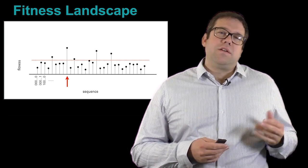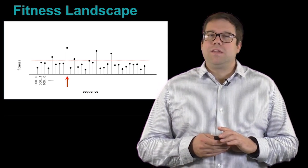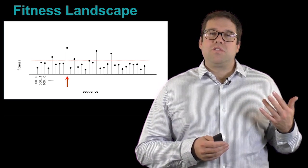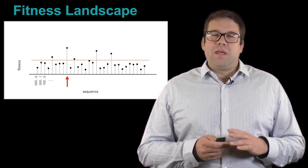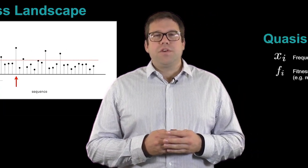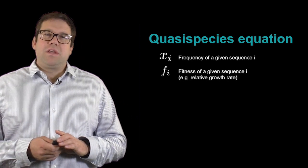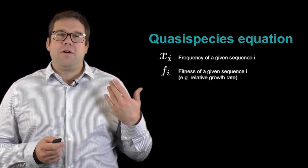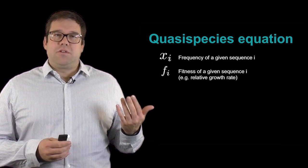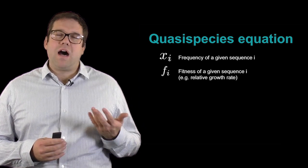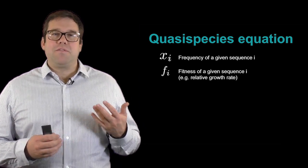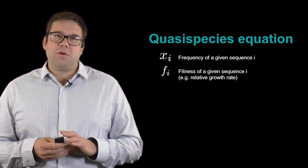There are easy ways for us to define this process mathematically, and this is actually some of the most traditional mathematical biology that we know. So let's look at a simple model for this fitness landscape. The first thing we can do is talk about the frequency of a particular sequence. We'll call here a particular sequence i.